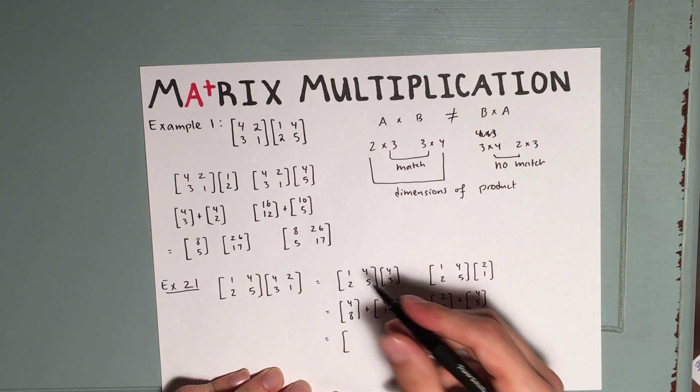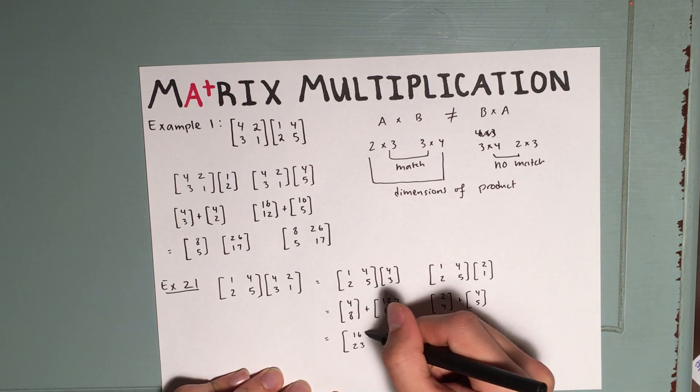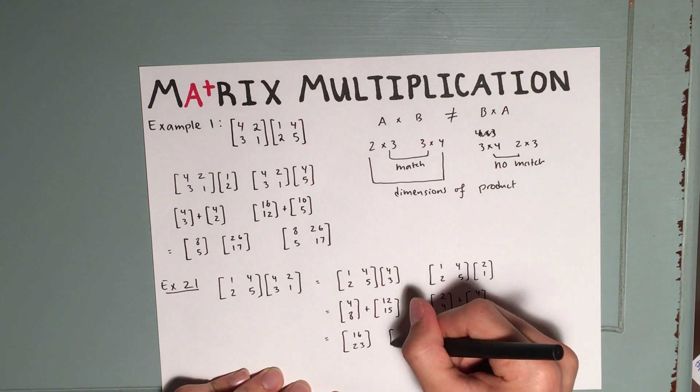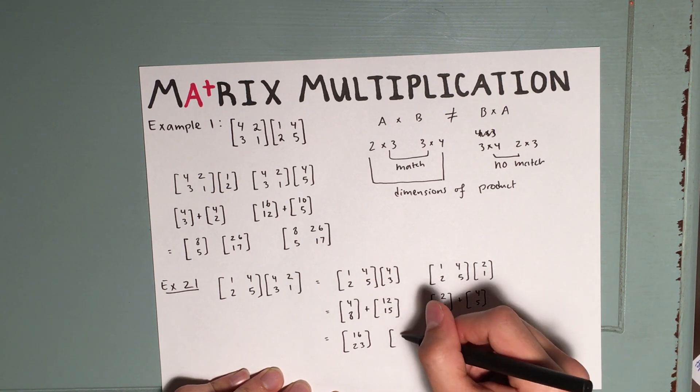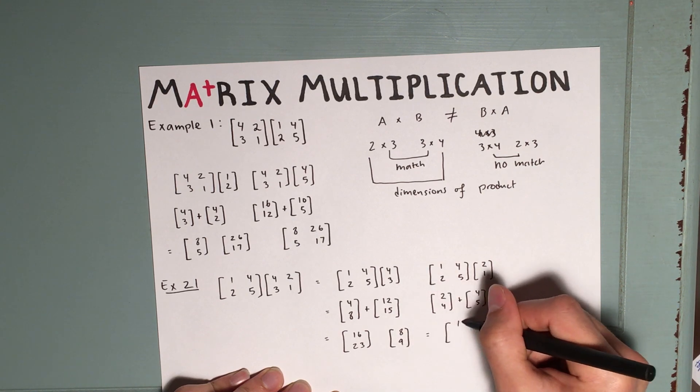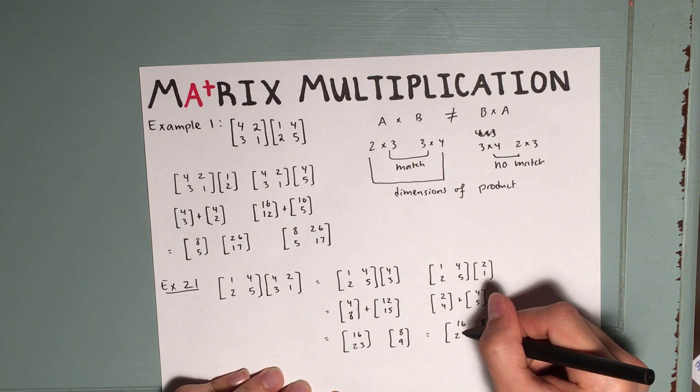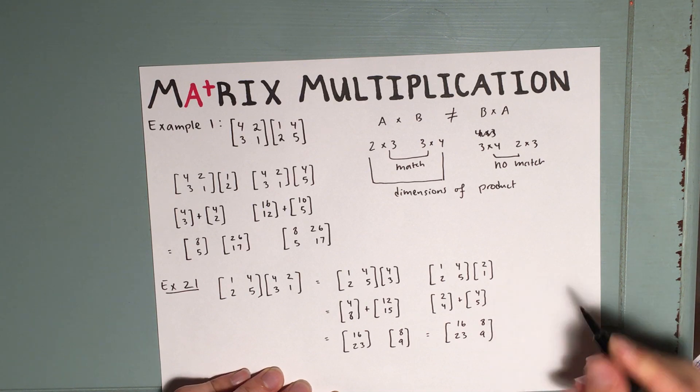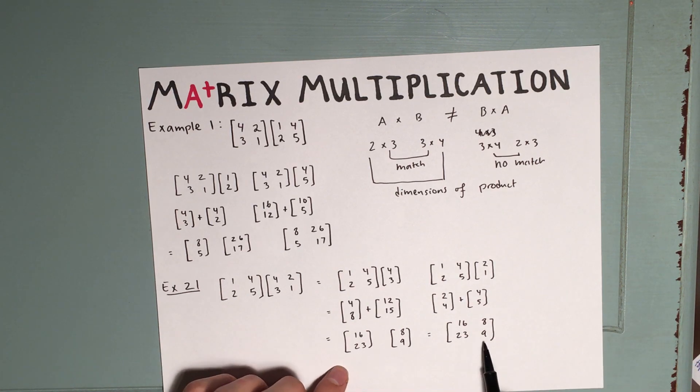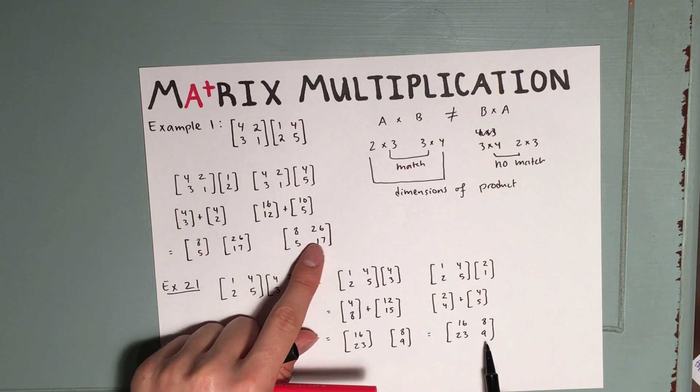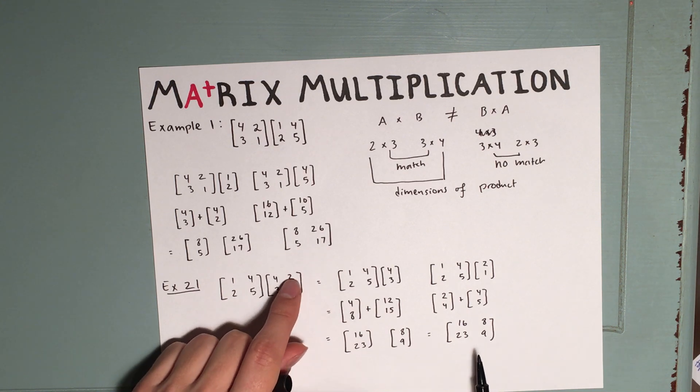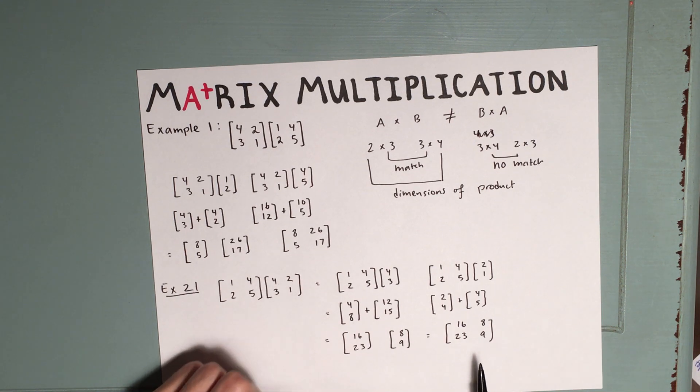So adding these numbers up, we get 16, 23, and 8 and 9. For a final answer of 16, 8, 23, 9. So you'll note that 16, 8, 23, 9 is not the same matrix as 8, 26, 5, 17. We haven't made a mistake. It's just that AB is not necessarily BA.